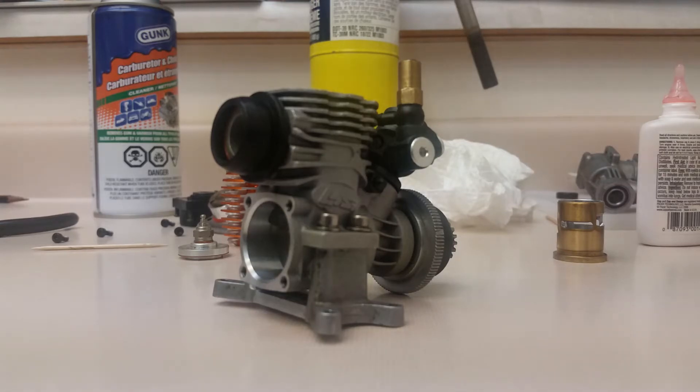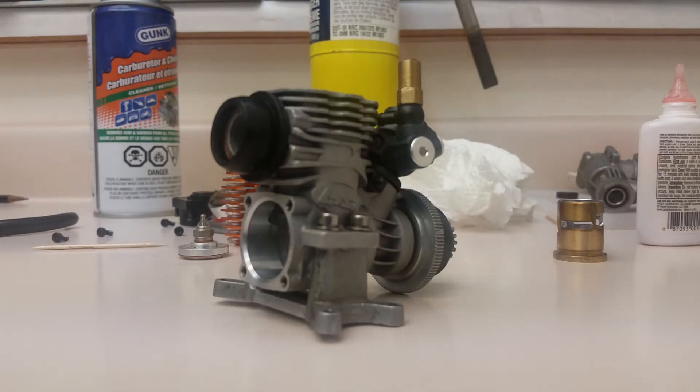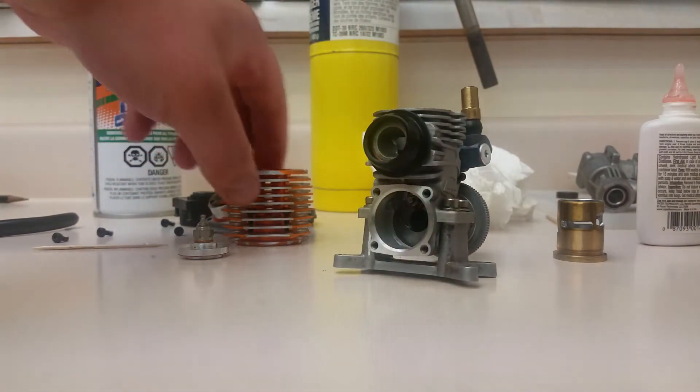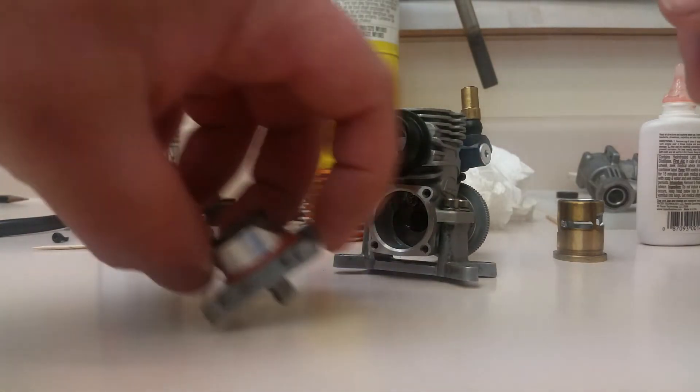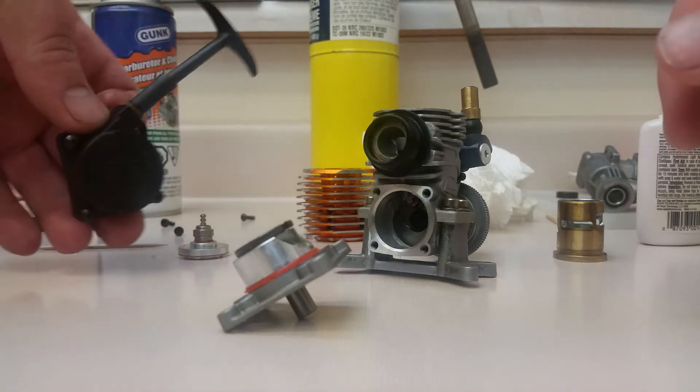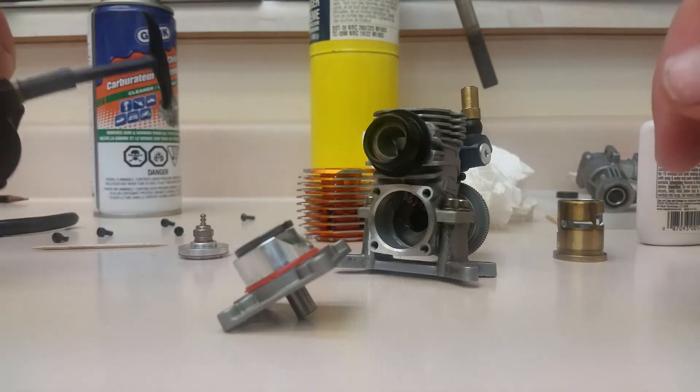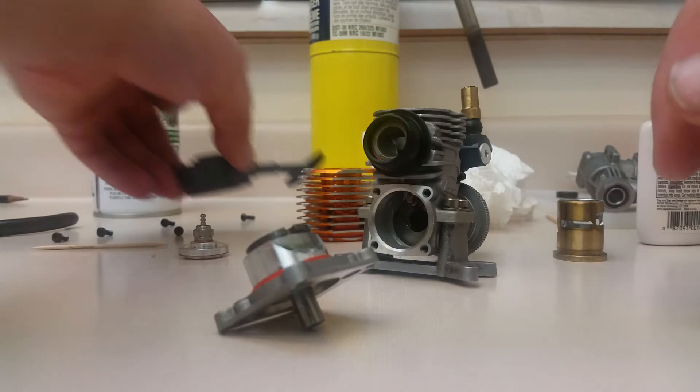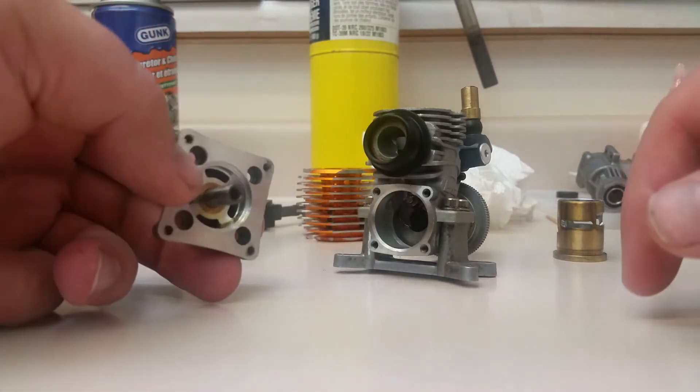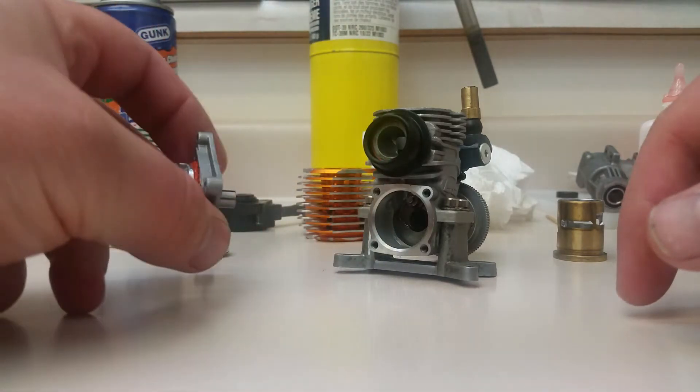I'll explain some things I've done to this engine. I've never run it before but it is modified with some Traxxas parts which you guys might find interesting. We'll get into the Traxxas stuff first. Here is a Traxxas 2.5 or 3.3 pull starter and one-way bearing, and here is a backplate and starter shaft for a 3.3 or 2.5. They're both the same in case you weren't aware.